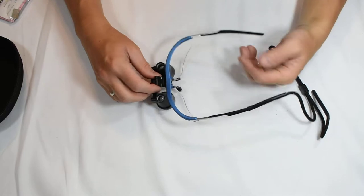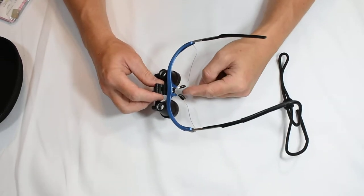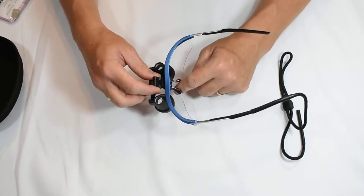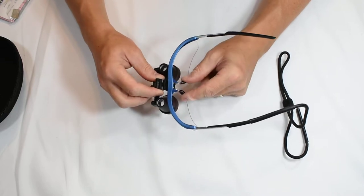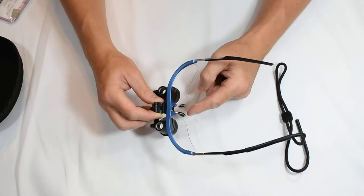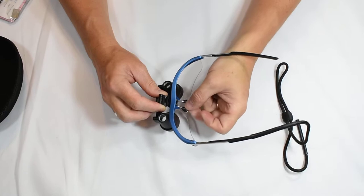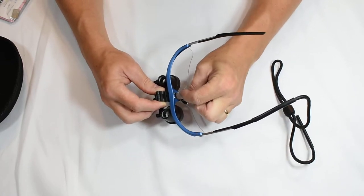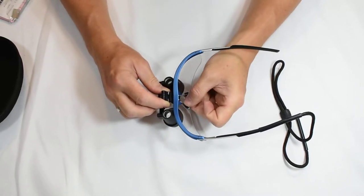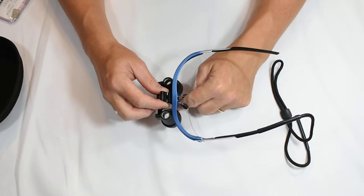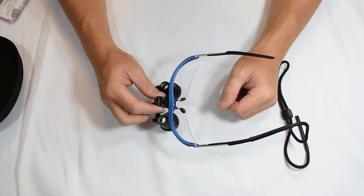Now another feature that you want to look at is adjustment to the nose pads. If you want the frames to sit higher on your nose you'll need to squeeze the nose pads together. If you want them to sit further down on your face or if you have a wider nose bridge, you'll need to open those up accordingly to what your needs are.